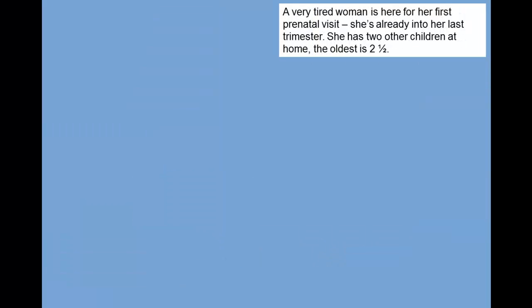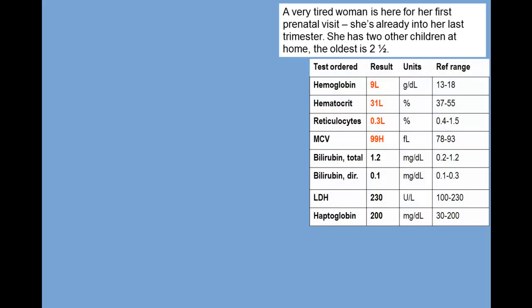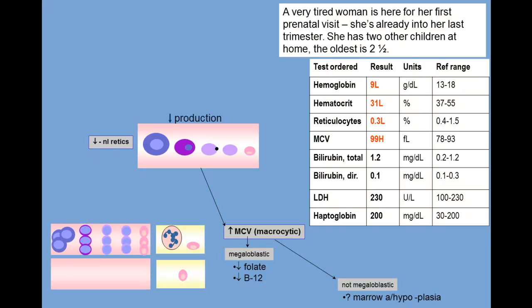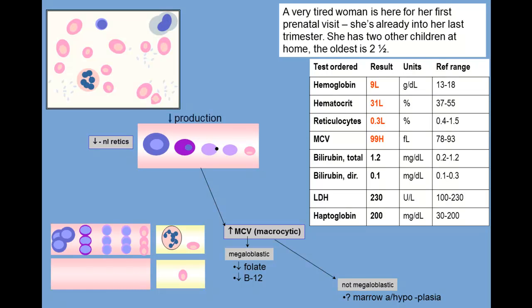In this last case, a worn-out woman with two children under age 3 drags herself in for her first prenatal visit, well into her first trimester. Her hemoglobin, hematocrit, and reticulocyte count are low — a decreased production anemia. Her MCV is high, putting her into the macrocytic category. Her peripheral smear shows classic hypersegmented polys — a megaloblastic anemia. In this case, pregnancy-related folate deficiency has caught up with her.